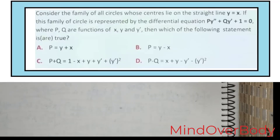We are given: consider the family of circles whose centers lie on the straight line y = x. This family is represented by the differential equation p·y'' + q·y' + 1 = 0, where p and q are functions of x, y, and y'. We are expected to find the coefficient of y'' (which is p) and the value of p + q.